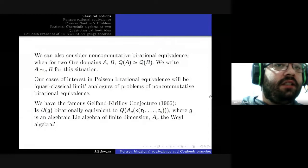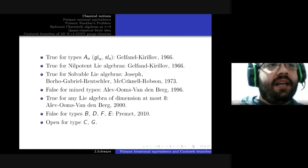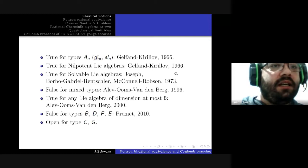Regarding the Gelfand-Kirillov conjecture itself: it was shown to be true for type A, for nilpotently algebras. We have one of those nice cases in mathematics where a result is proved simultaneously by different groups — here three groups of six people in total — for the case of solvable algebras in 1973.